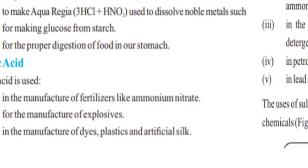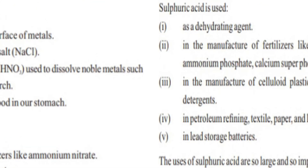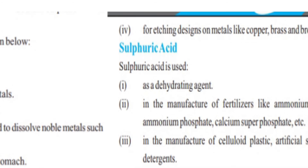Use number two: for the manufacturing of explosives (aatish-fishan materials), HNO3 is used. Use number three: in the manufacture of dyes, plastics, and artificial silk — nitric acid is used to make these. Use number four: for etching designs on metals like copper, brass, and bronze — HCl is used to create designs on these metals. These were the uses of Nitric Acid.